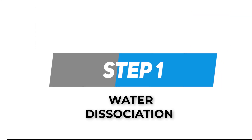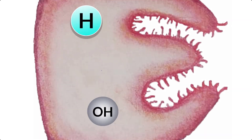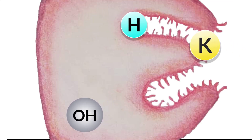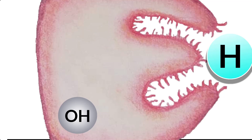Step one: water dissociation. Water simply splits into hydrogen ions and hydroxyl ions. The hydrogen ions from water dissociation are the main source of hydrogen ions in the luminal site. These hydrogen ions then pass through the canalicular system in exchange for potassium ions via the proton pump, or hydrogen-potassium pump. Now we have hydrogen ions in the luminal site and hydroxyl ions inside the parietal cells.